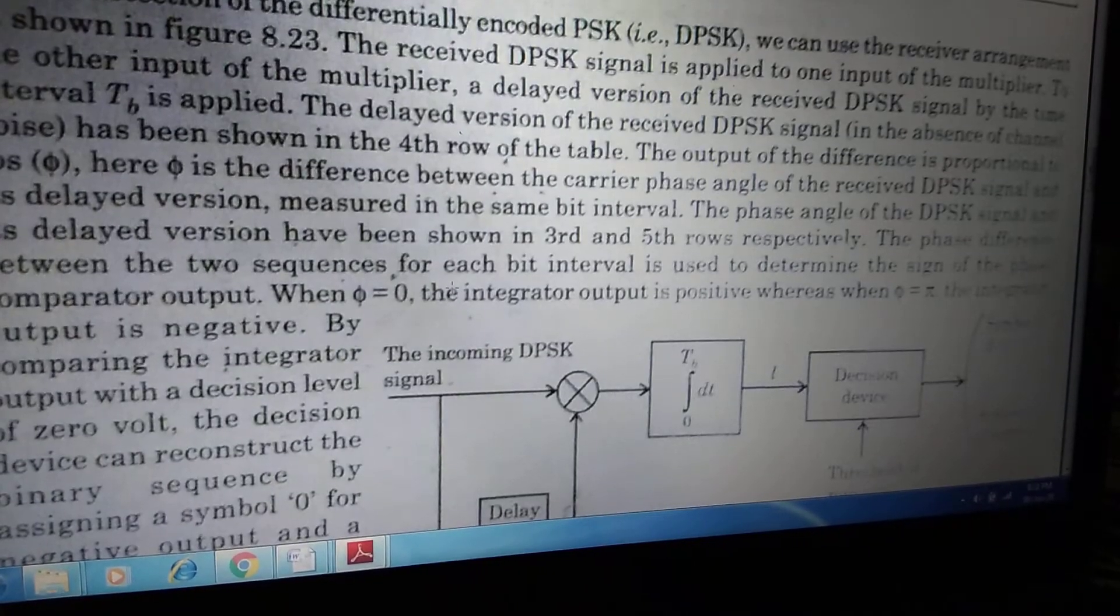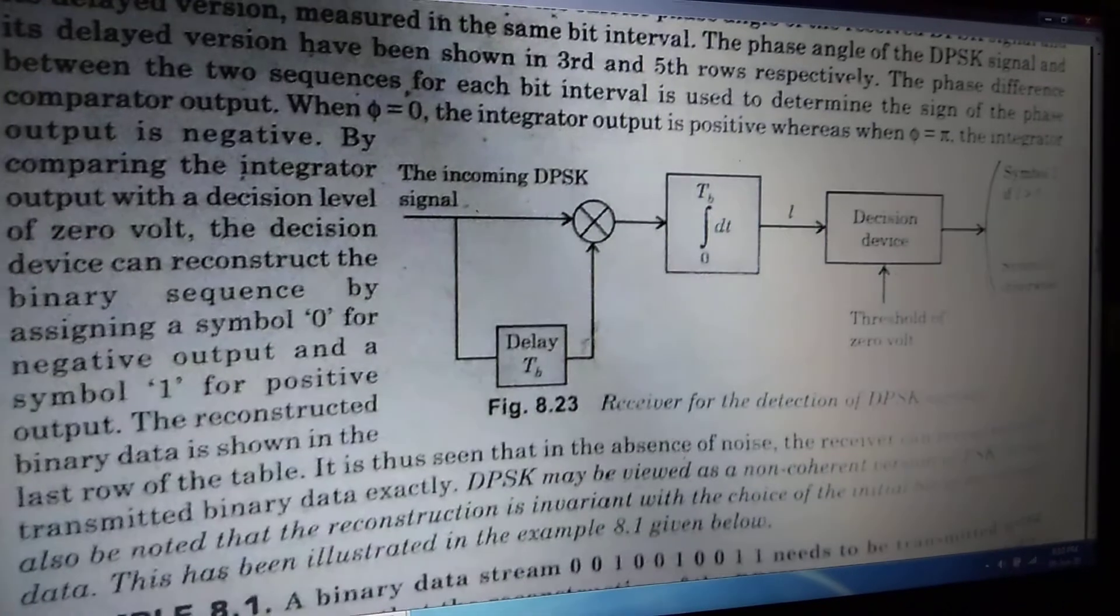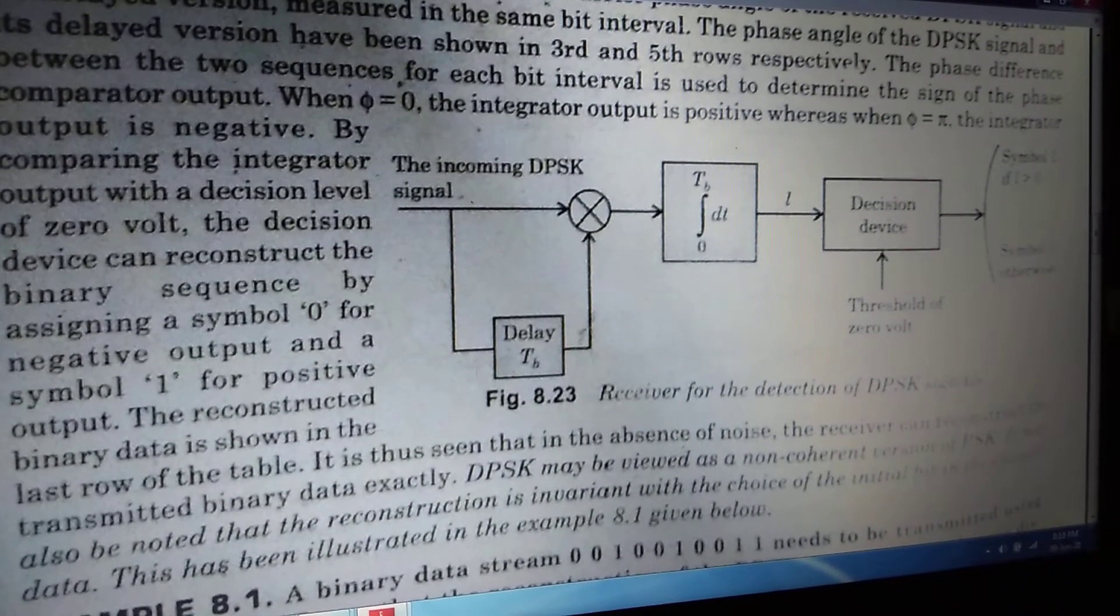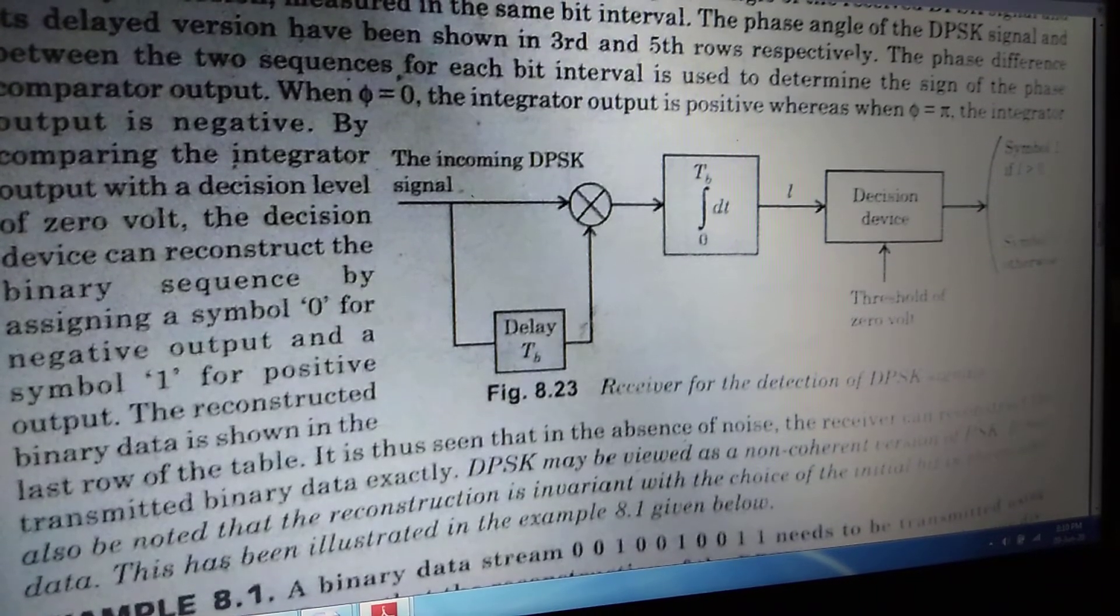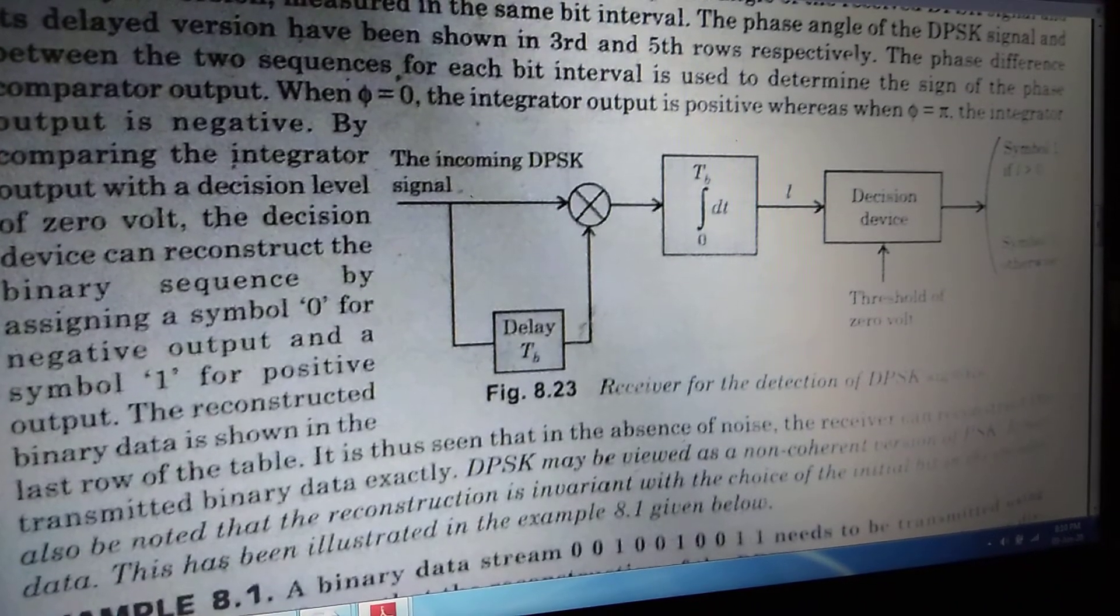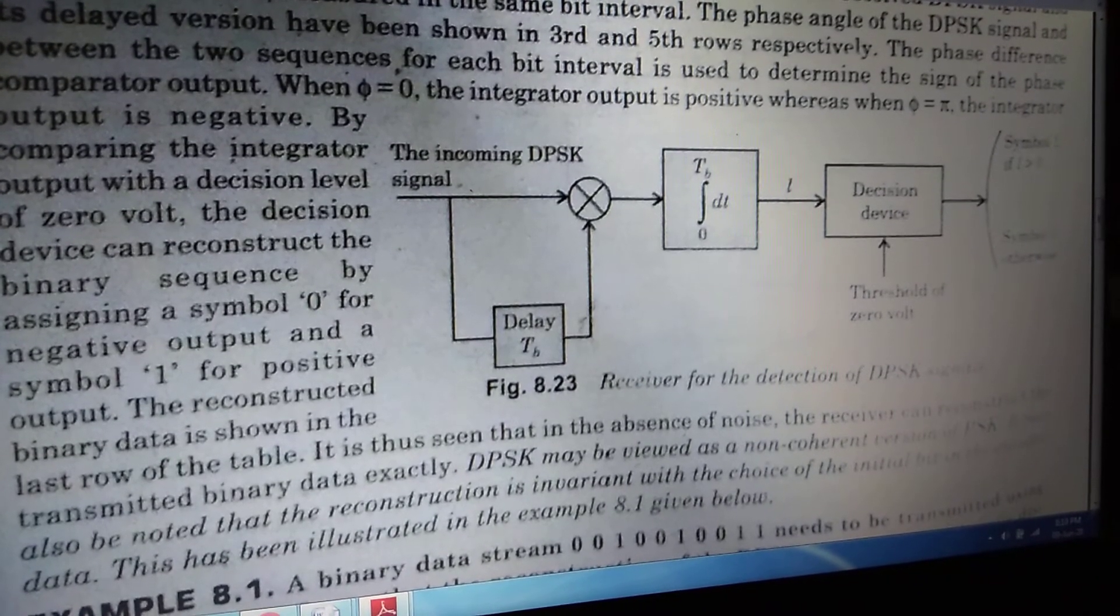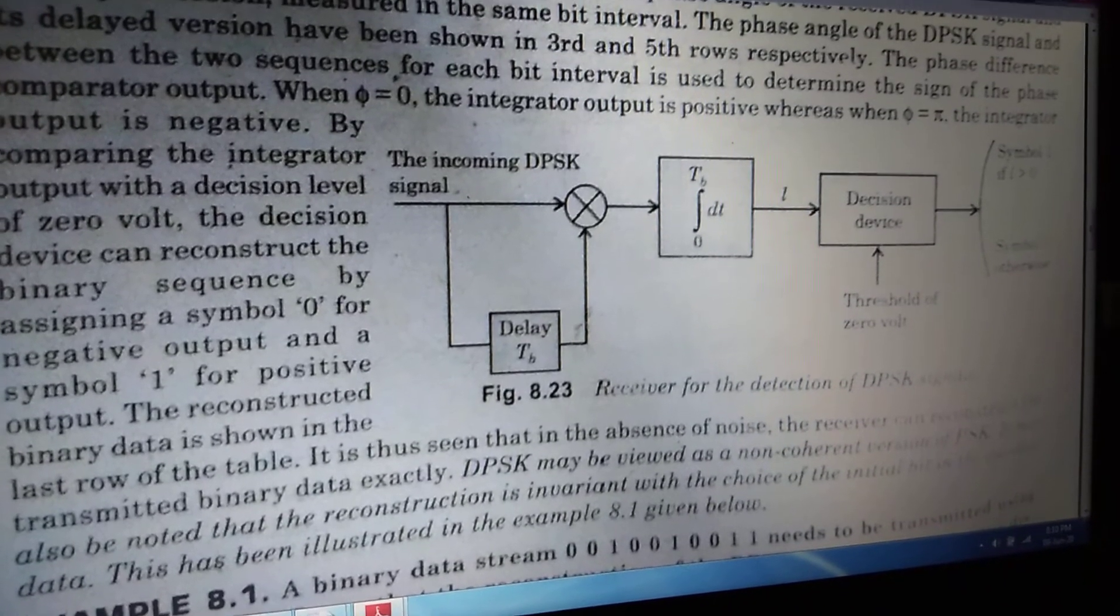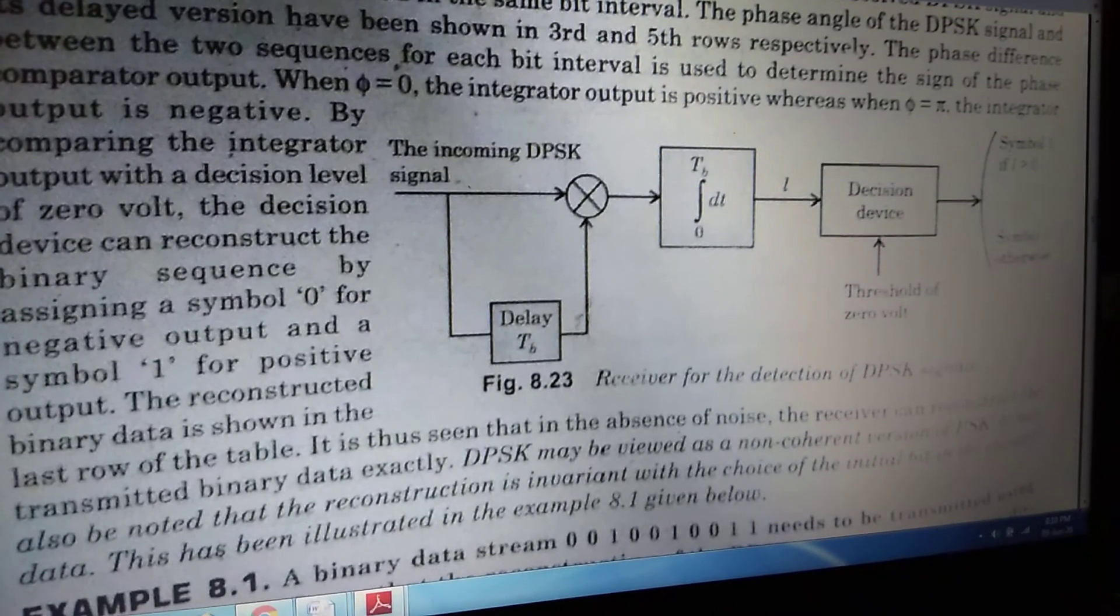Obviously, we will have to see the detection of the DPSK. DPSK detection means we have to recover the signal. So if you see the block diagram of the receiver of the DPSK, we will find that the incoming signal of the DPSK will be given to a particular mixer type of input. And in this mixer, we are giving another input that is called the delay of TB. From this end, we are getting one output that will be given to an integrator. And the limit of the integrator circuit is 0 to TB duration.